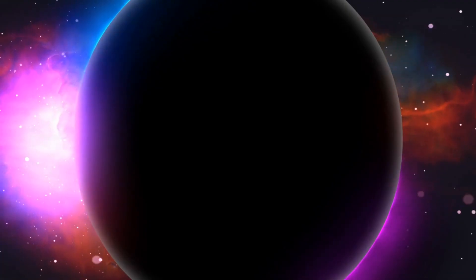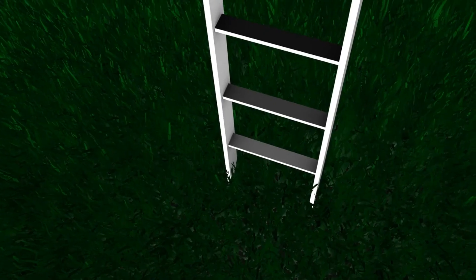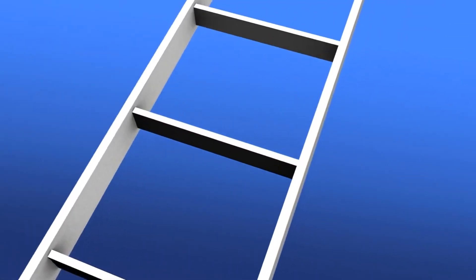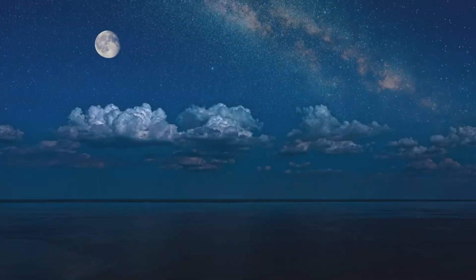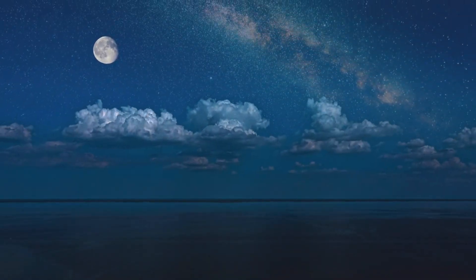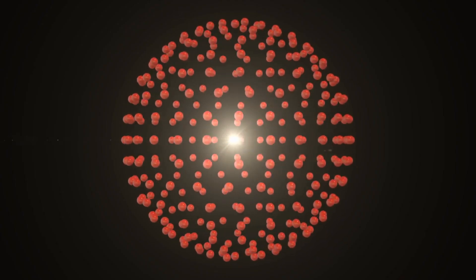While we can't reach the edge of the universe, there is a limit to how far we can see. This limit is our cosmic horizon. It's the farthest point in the universe from which we can receive light. This is determined by the speed of light and the age of the universe. We can only see objects whose light has had time to reach us since the Big Bang.